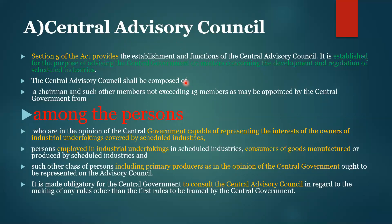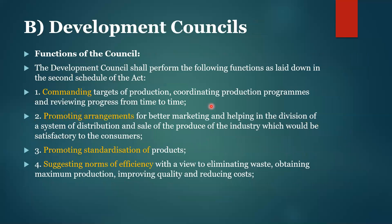Now let's talk about the Central Advisory Council. This council basically works as an advisory council — it gives advice on important concerns and issues related to the development and regulation of schedule industries. It advises the central government. It can have a maximum of 13 members, decided by the central government. Members can include persons from industry, industrial undertakings, consumers, primary producers — whoever the government of India considers the right person.